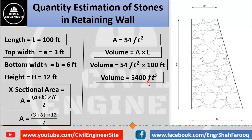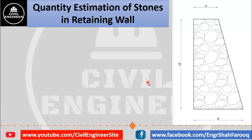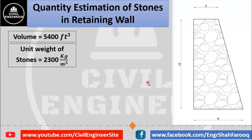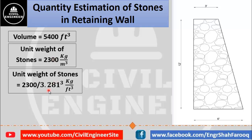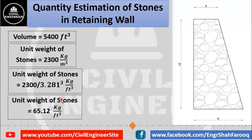If you want to calculate the quantity of stone in kilograms, use these steps. The volume of the retaining wall is 5400 cubic feet. The unit weight of stone masonry is 2300 kilogram per meter cube, but since we calculated volume in cubic feet, we need to convert. We know that 1 meter equals 3.281 feet, so divide 2300 by 3.281. After calculation, the unit weight of stones is 65.12 kilogram per cubic feet.